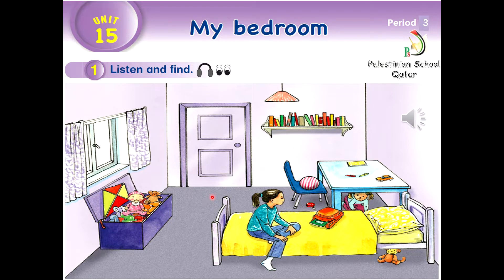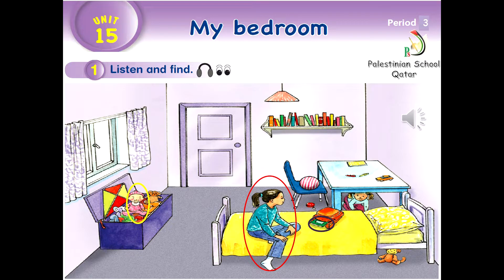I want you to listen to this track and try to know where the items are. Track 57, Unit 15, Period 3, Activity 1: Listen and find. The doll is in the box. The book is in the bag. Amal is on the bed. The car is on the table. The box is under the window. Jamila is under the table.